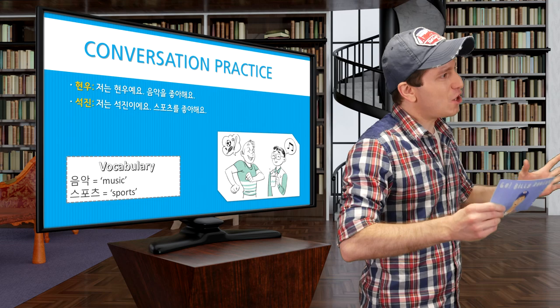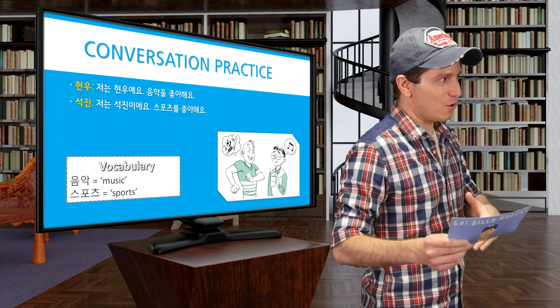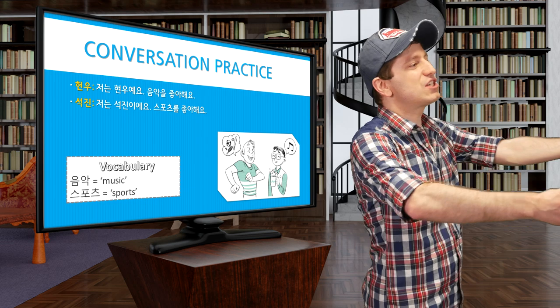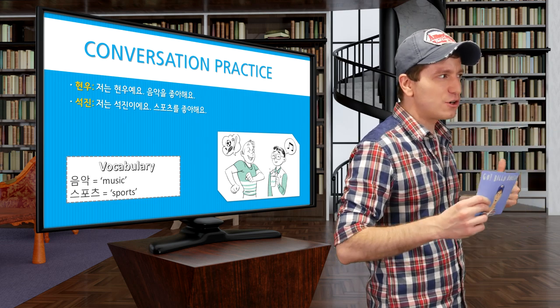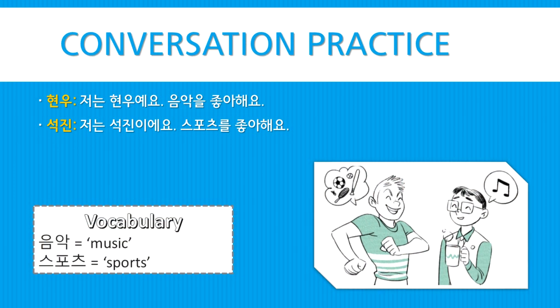After that, 석진 replies 저는 석진이에요. Notice that 석진 needs to change the topic to 저 for him because you're no longer talking about 현우. 스포츠를 좋아해요. I like sports. So now again 석진 already changed the conversation to me, 석진. So he doesn't need to say 저는 at the start of the second sentence.